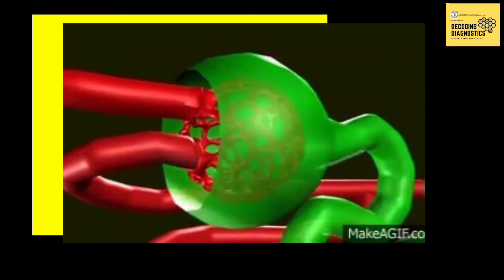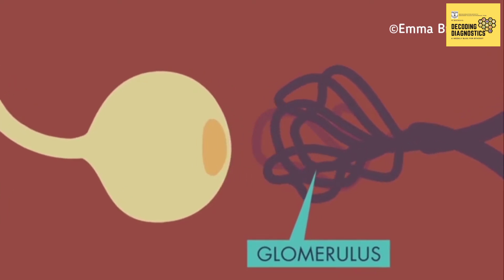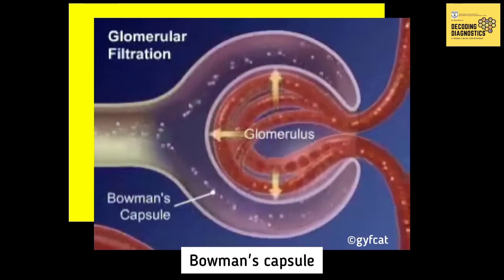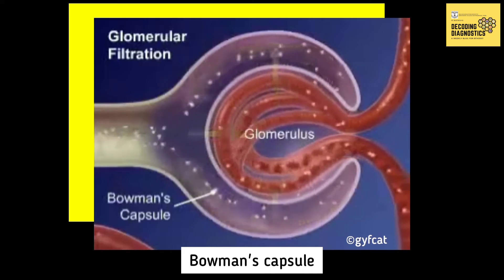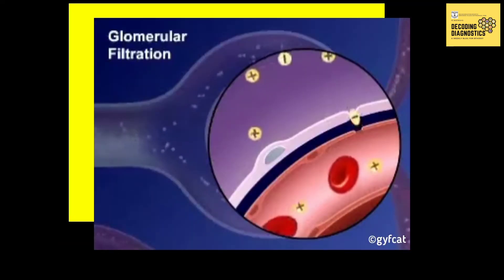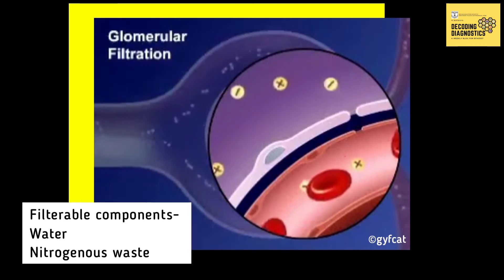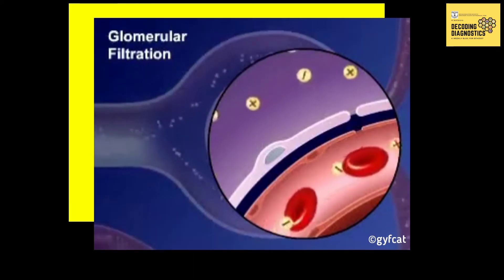The glomeruli are tiny ball-shaped structures composed of capillary blood vessels present in the Bowman's capsule. During filtration, blood enters the afferent arteriole and flows into the glomerulus, where filterable blood components such as water and nitrogenous waste move towards the inside of the glomerulus.